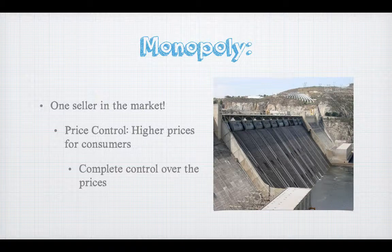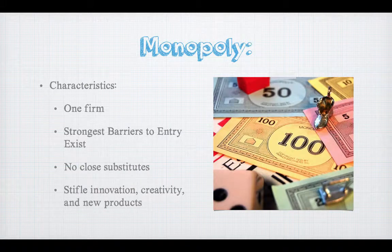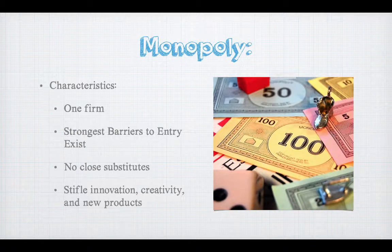In the next part, we'll look at some historical monopolies. The government is very involved in monitoring monopolies. Characteristics of a monopoly include one firm, very strong barriers to entry, no close substitutes, and monopolies tend to stifle innovation and creativity, meaning you don't see many new products — which makes them generally bad for consumers.